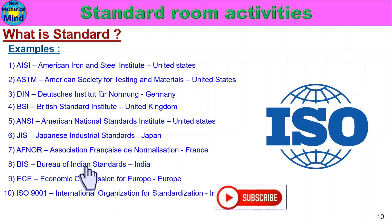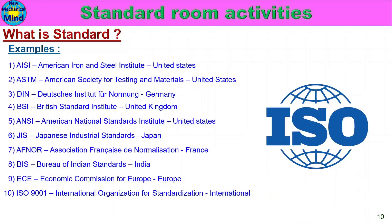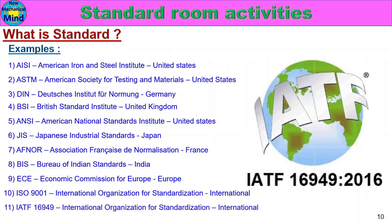ECE — Economic Commission for Europe — publishes a series of standards at the international level, used by all countries. IATF 16949 — from the International Organization for Standardization — is an international standard followed by all countries. International standards are prepared for all countries to follow, while national standards are prepared for one specific country.